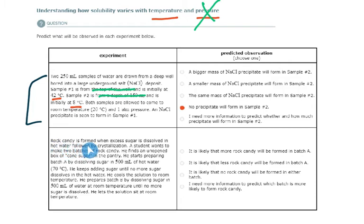Here we have rock candy. And we have a student wants to make two batches of rock candy. He finds an unopened box of cane sugar in the pantry. He starts preparing batch A by dissolving sugar in 500 mils of hot water.